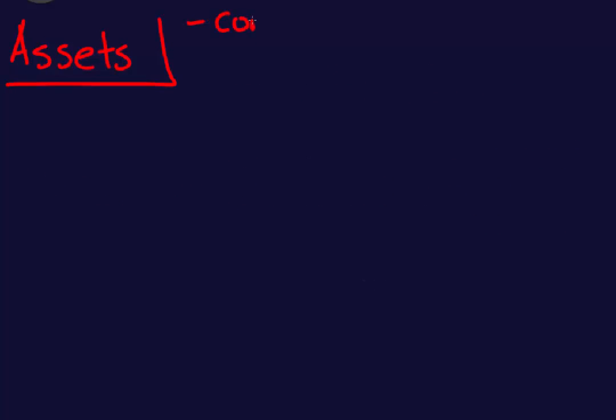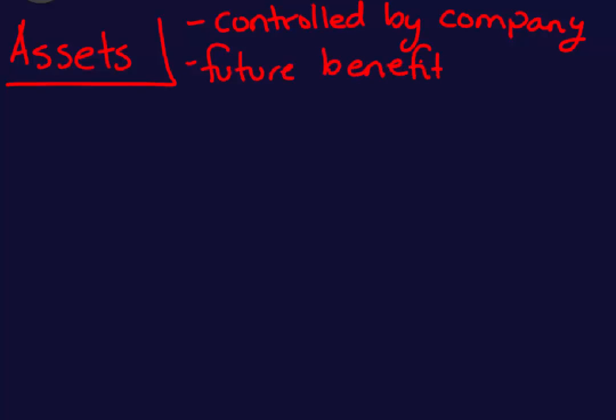First let's talk about assets. The definition of an asset is a resource that's controlled by the company that's expected to benefit the business in the future. Assets have to give the company a future benefit, and this is really important to remember because it's going to help us later on distinguish the difference between an asset and an expense to a company.